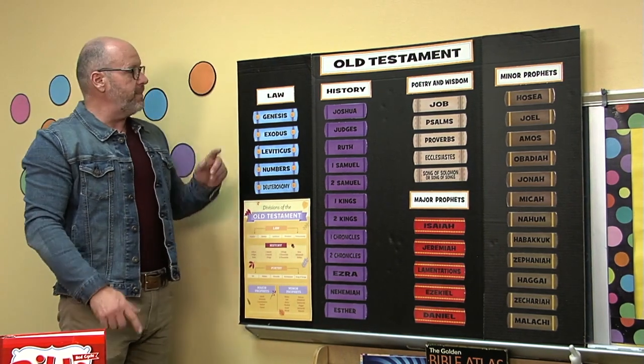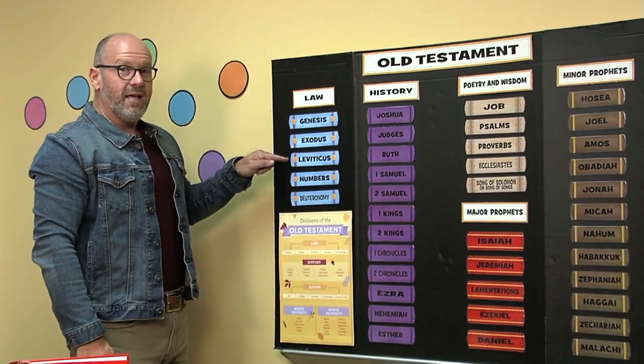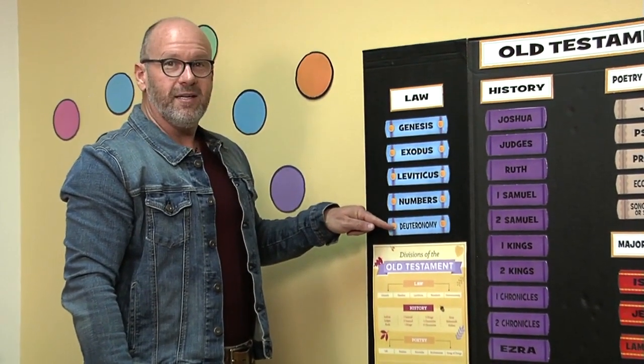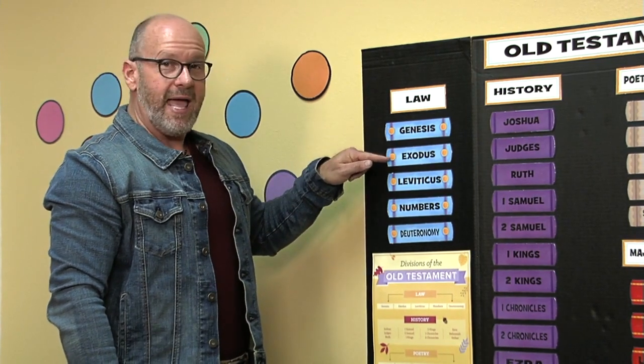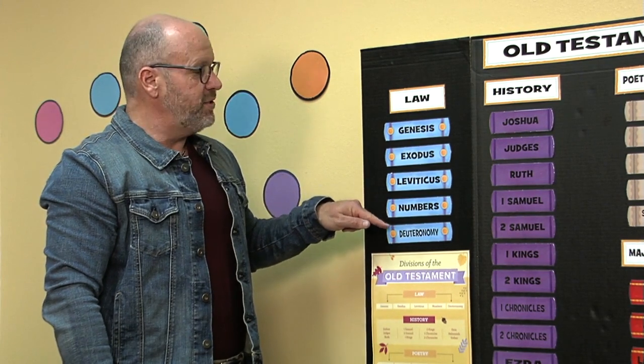Let's say them together: Genesis, Exodus, Leviticus, Numbers, Deuteronomy. Let's try it again: Genesis, Exodus, Leviticus, Numbers, Deuteronomy. We're going to be working on all of these books of the Bible, but we'll just do them a division at a time and you can be practicing those so you can get it checked off on your list.